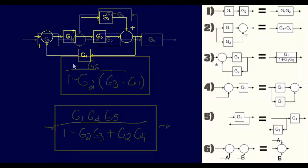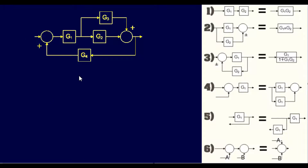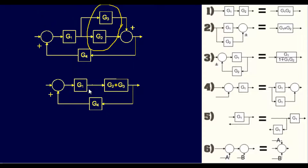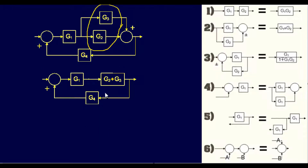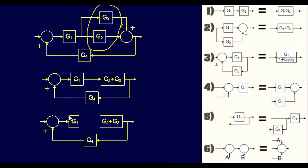For our last example, we have 4 blocks and 2 summing points. I'm going to start by tackling the easiest blocks to simplify. I believe I can simplify G3 and G2, because that would get rid of a summing point as well as eliminate two blocks. Looking at our rules, this mimics Rule 2, so it would become G2 plus G3. So I simplified it down to one block: G2 plus G3. Simplifying one more time, we multiply — that gives G1 times the quantity G2 plus G3.